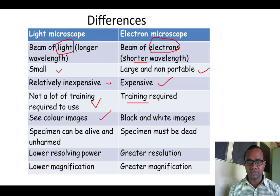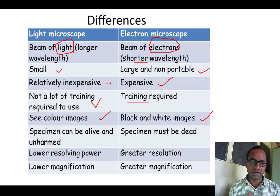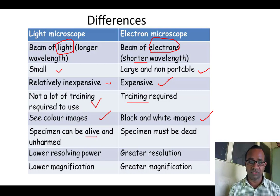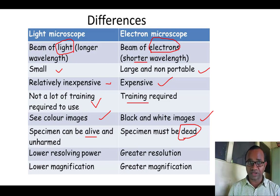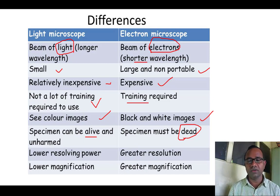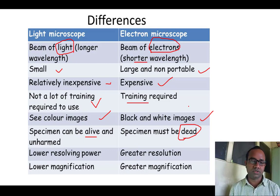Regarding color image: only black and white images are produced because we are using electrons instead of light. Specimens in a light microscope can be studied live or in a dead condition, but in the electron microscope the specimen must always be prepared because the sample is kept in a vacuum. We generally use non-living species of an object.